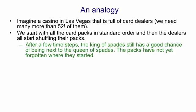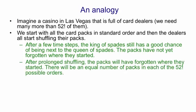After a few shuffles, there's still a good chance that the king of spades will be next to the queen of spades in any given pack. So the packs have not yet forgotten where they started—their initial order is still influencing their current order. If we keep shuffling, eventually the initial order will be irrelevant. The packs will have forgotten where they started.